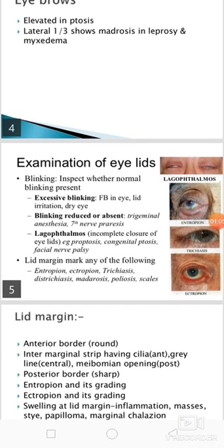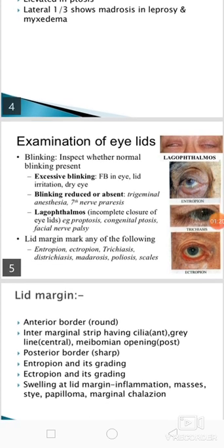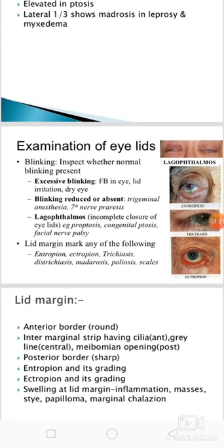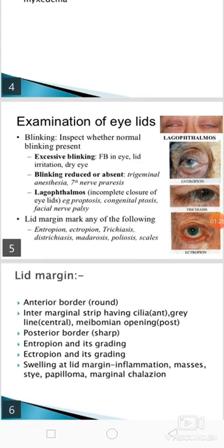Then we should do the examination of eyelids. We should inspect whether normal blinking is present or not. Excessive blinking will be present in case of foreign body in eye, lid irritation, or dry eye. Blinking is reduced or absent in case of trigeminal anesthesia or seventh nerve paresis.